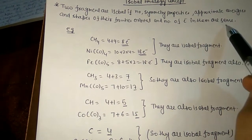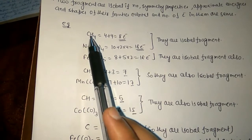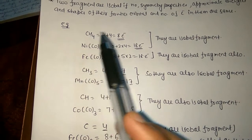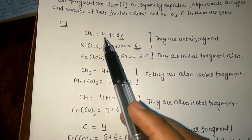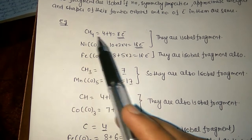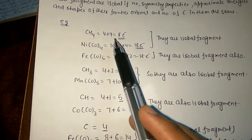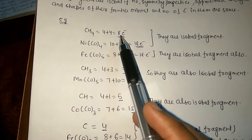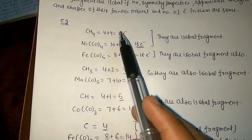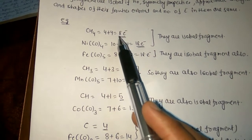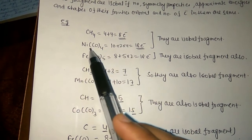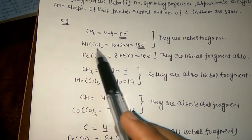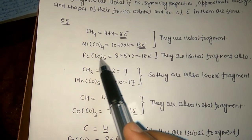For example, let us consider the CH4 molecule. In CH4, four electrons are contributed by the carbon atom and four electrons are contributed by hydrogen, giving a total of eight electrons. We look at the last digit here — there are eight electrons.